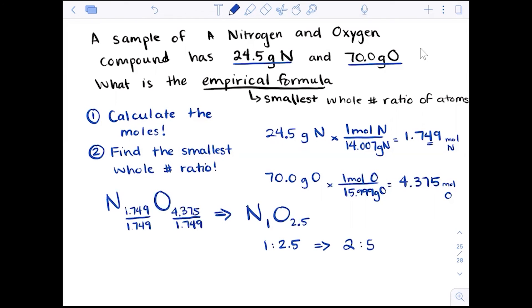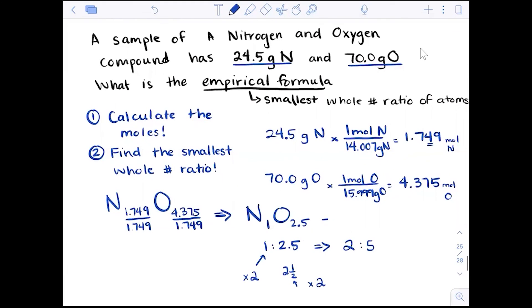Multiply that by 2. 2.5 times 2 is 5, and 1 times 2 is 2. To get rid of that half, I would multiply it by 2. But what I do to one side, I have to do to the other. So my empirical formula, N2O5.